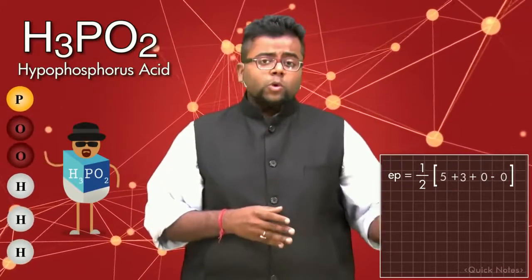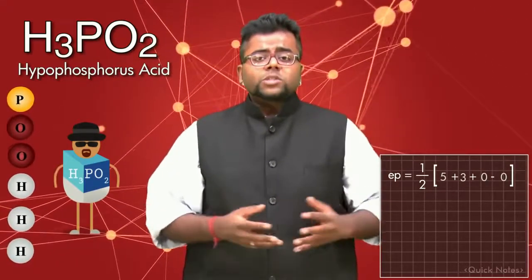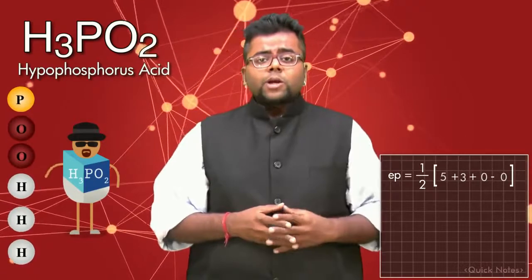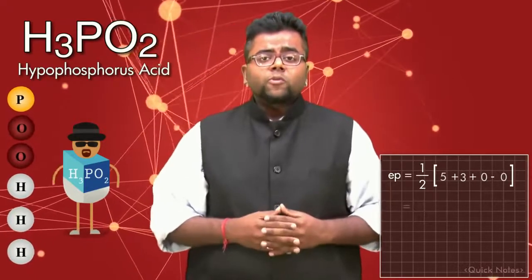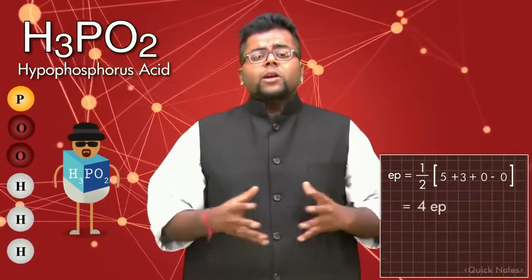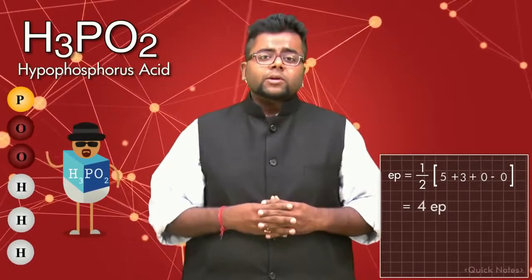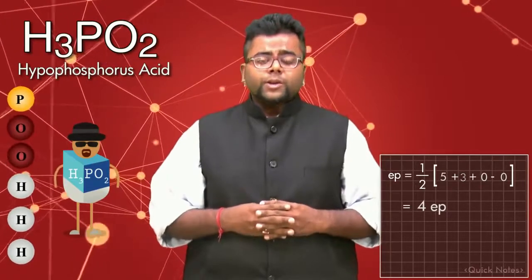So the total becomes 5 plus 3, which is 8, and divided by 2 will give you 4 electron pairs. And for 4 electron pairs we have the tetrahedral geometry.